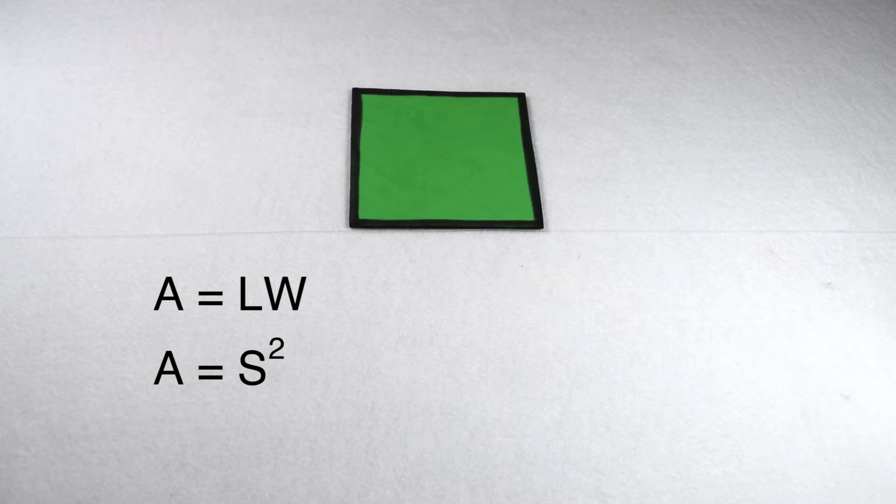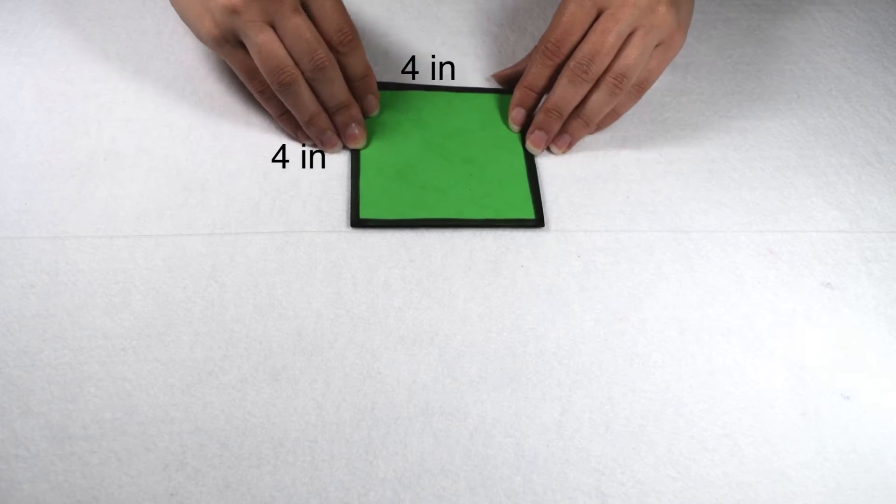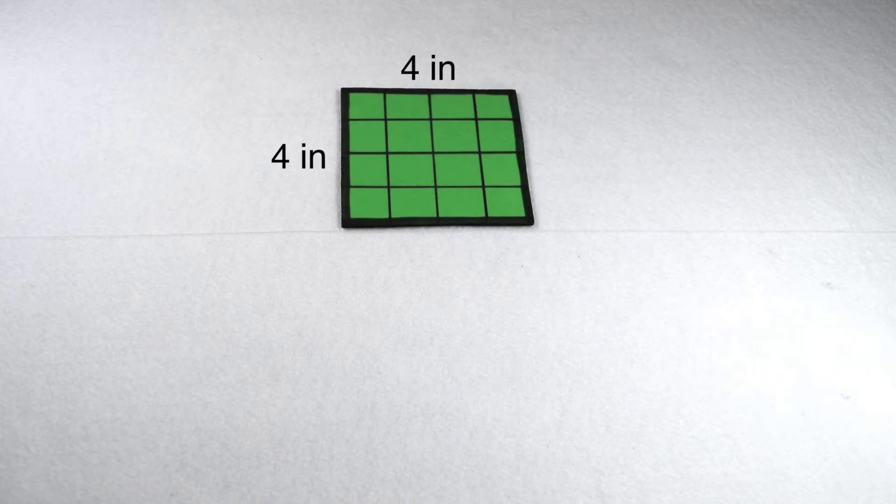To do this, we're going to use this square that has side lengths of 4 inches. To find this area, we're going to start by breaking it up into smaller squares that are worth 1 inch each.